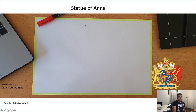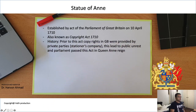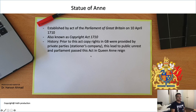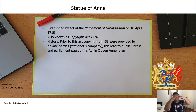After the Statute of Monopolies, the English Parliament passed another statute called the Statute of Anne, named because it was passed during the reign of Queen Anne. Prior to this act, copyright in engravings was granted to private parties — so-called stationary companies — which led to public unrest. The Statute of Anne is essentially the first copyright act, whereas the Statute of Monopolies was a patent system. IP law has two main branches: patents and copyrights.